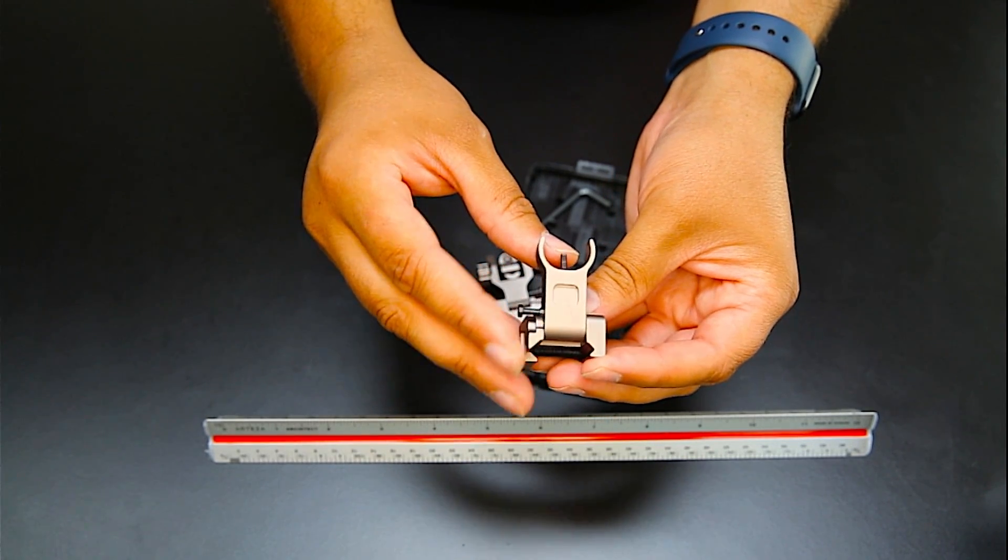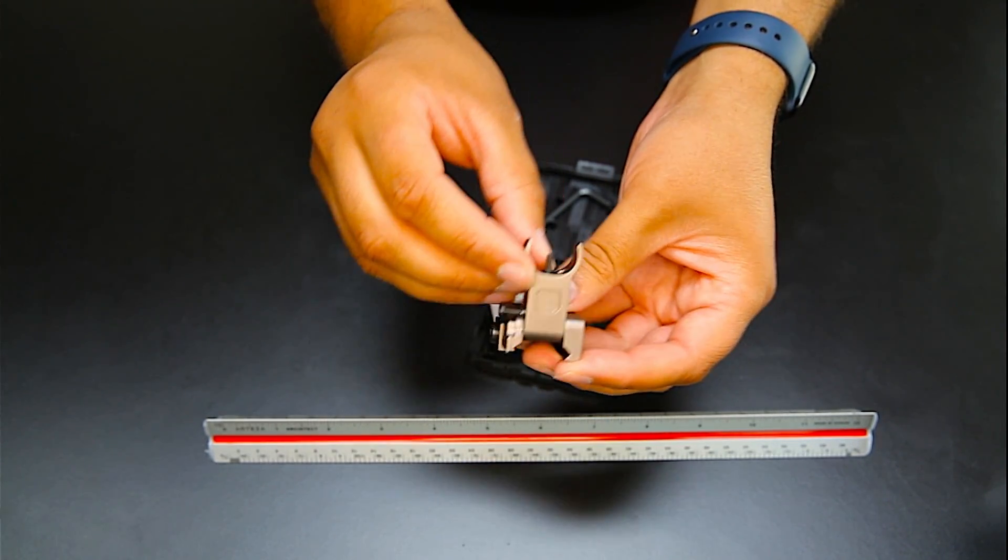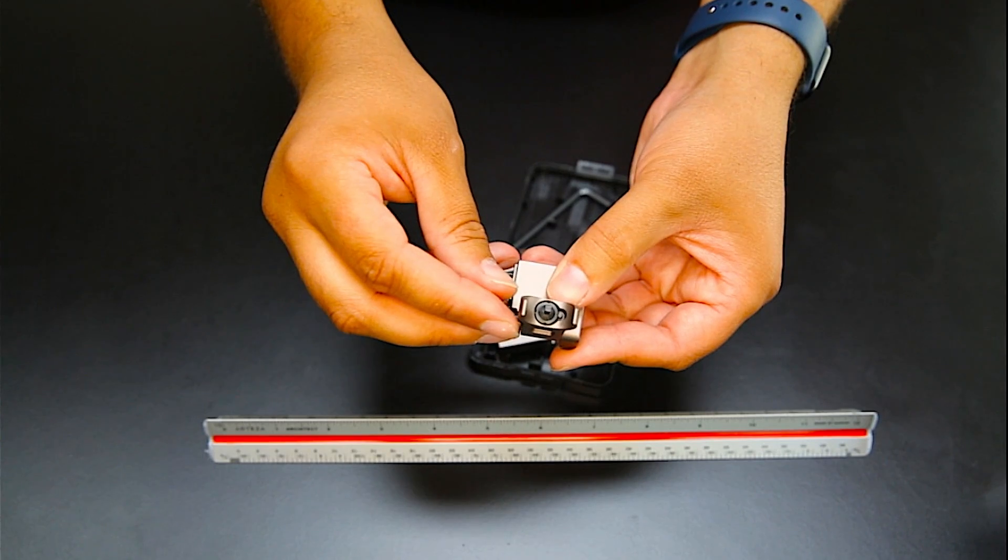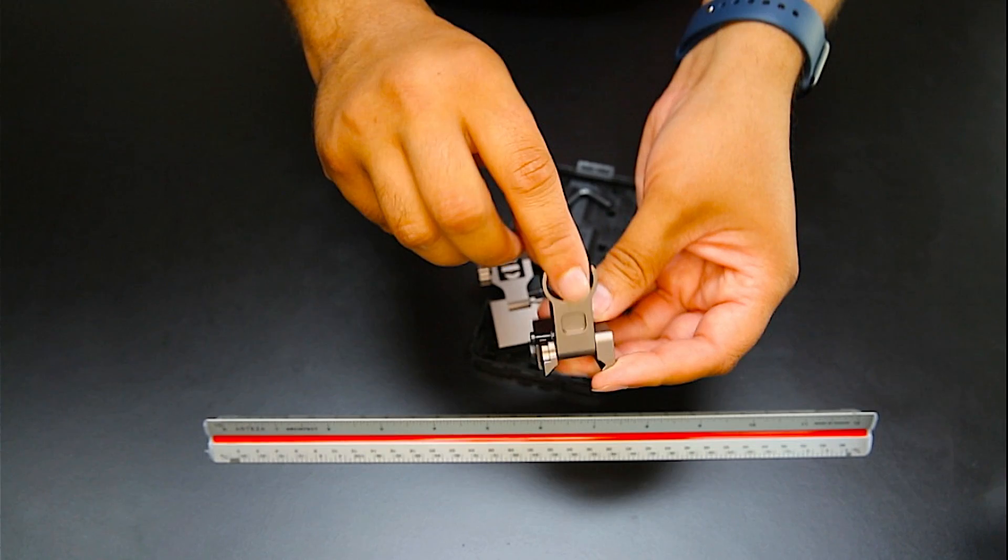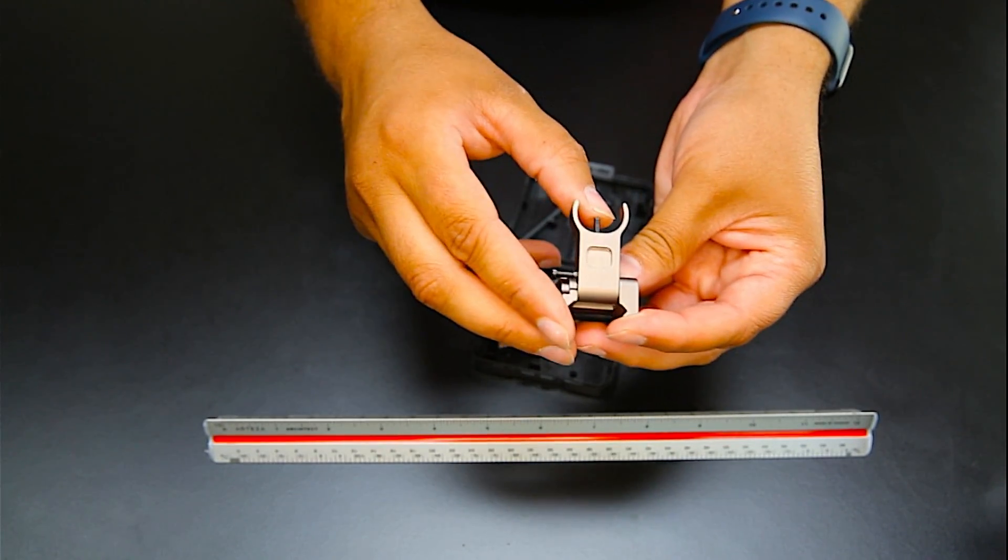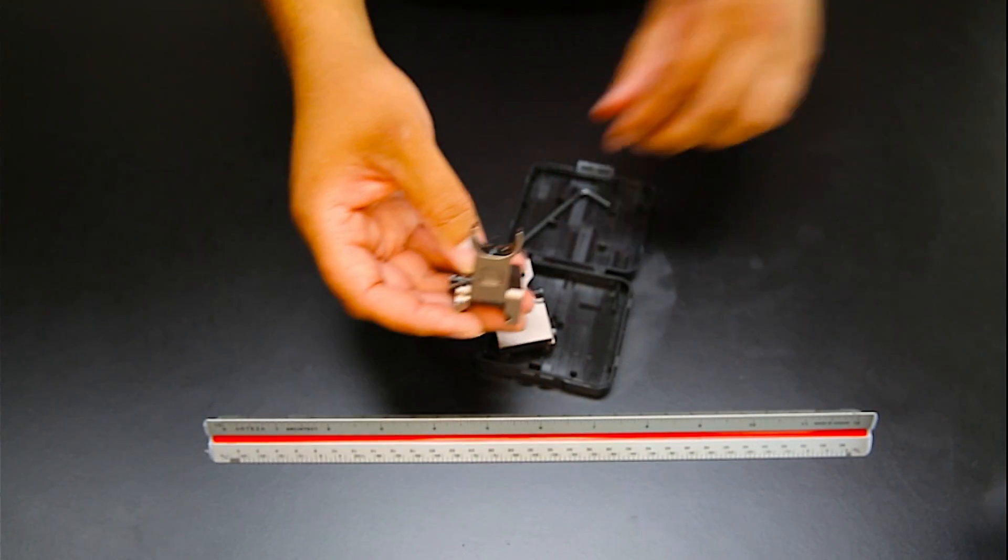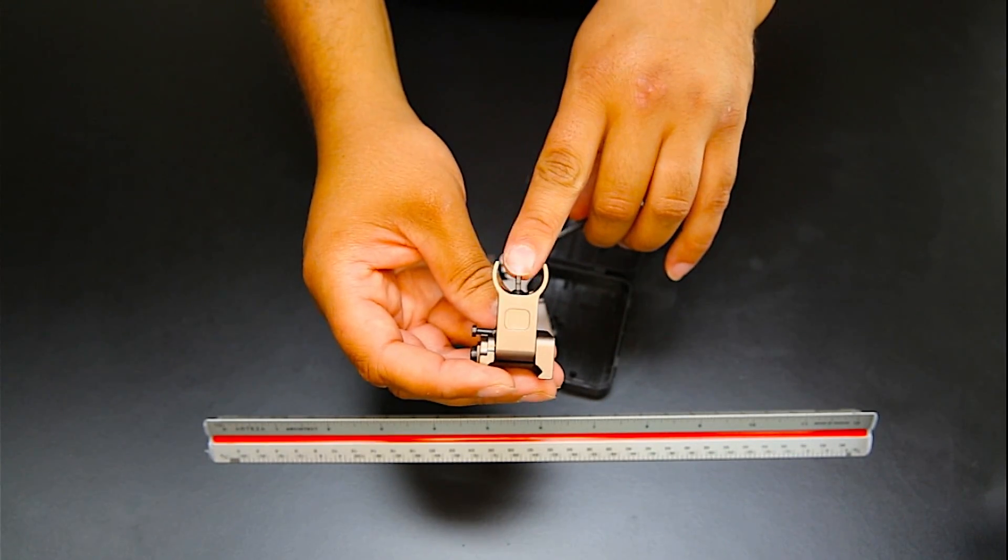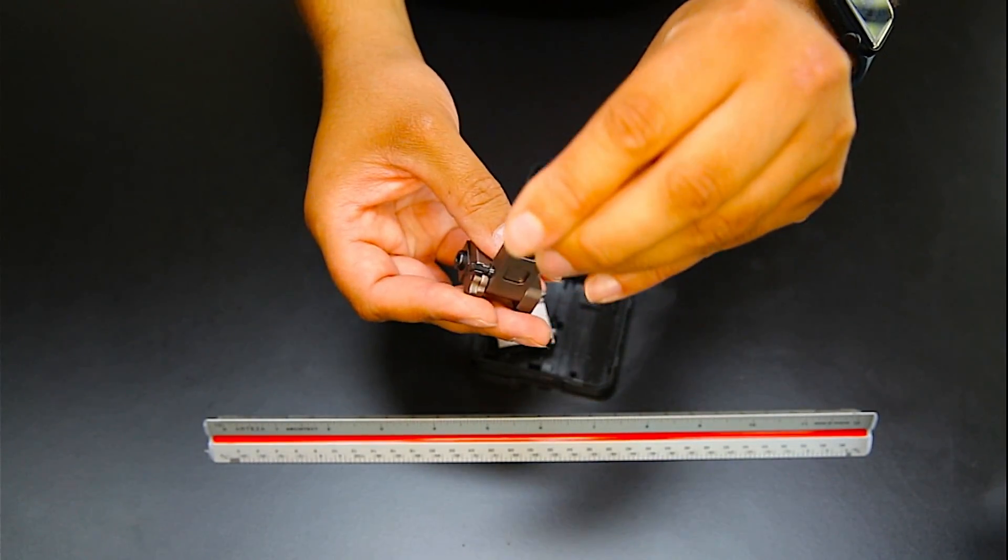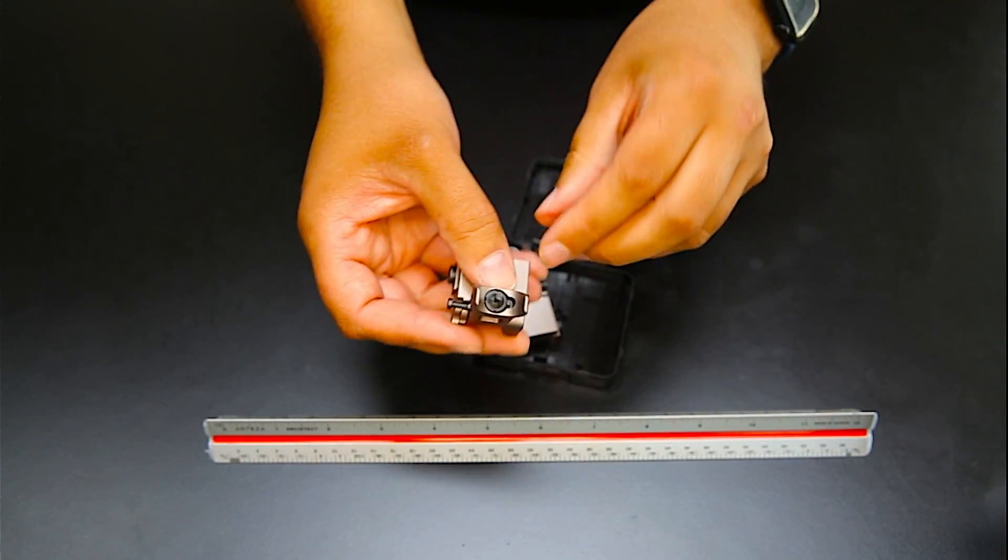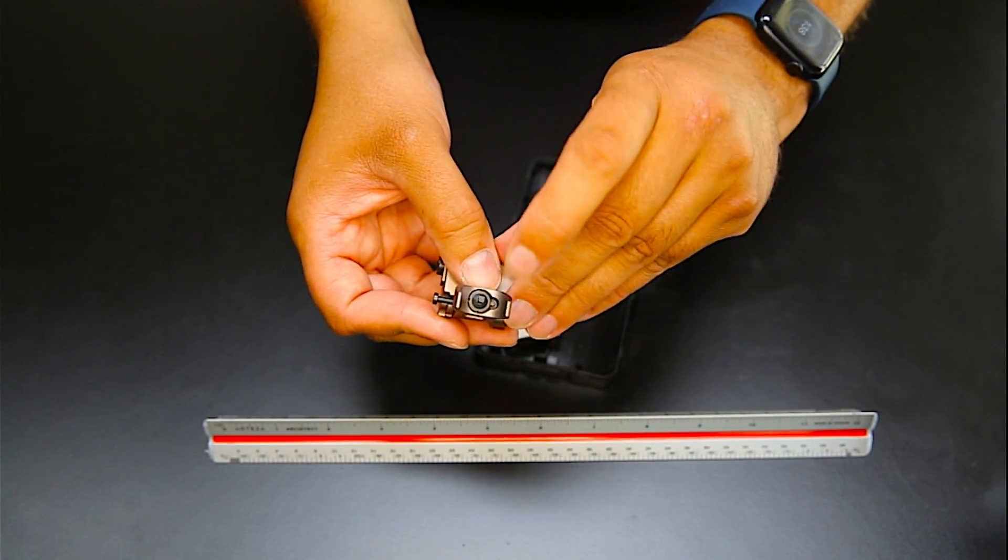And then you got the front sight where you can check the windage and elevation - or the elevation for the front, windage for the back. You can easily adjust this up and down by putting a smaller Allen wrench in, pushing that button and then twisting it up and down so it rotates.